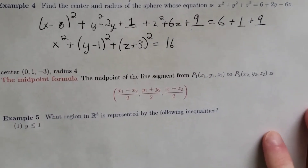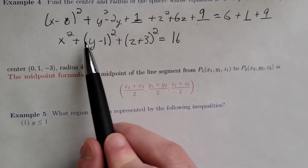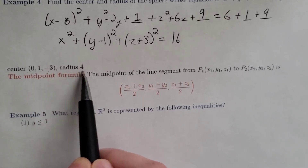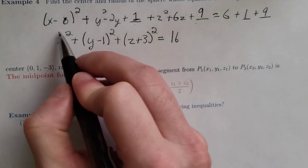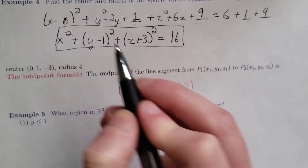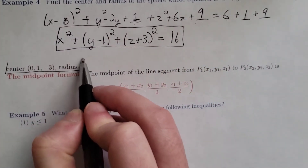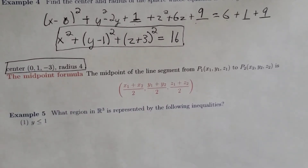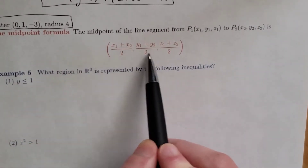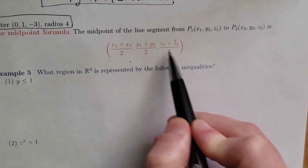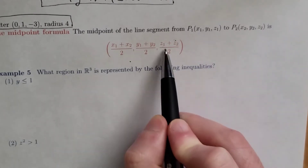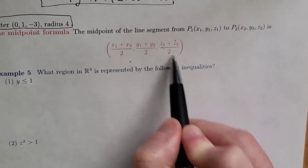So we have a sphere with center (0, 1, −3) and radius 4, since r squared equals 16. Here is the equation of the sphere in standard form, and here is the center and radius for that particular sphere. Quick note: the midpoint formula in three dimensions is very similar to the two-dimensional version — we just add a third coordinate, which is the z-coordinate of the first point plus the z-coordinate of the second point, divided by two.